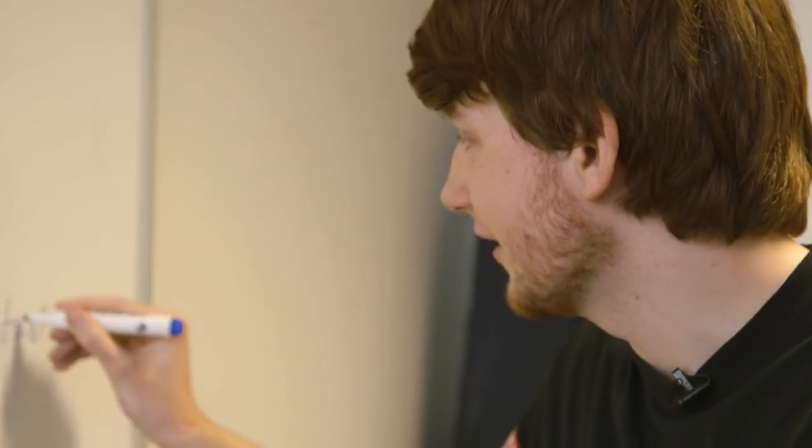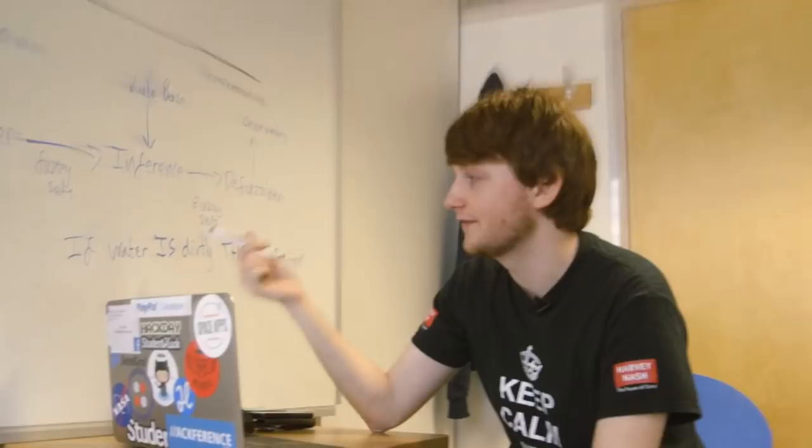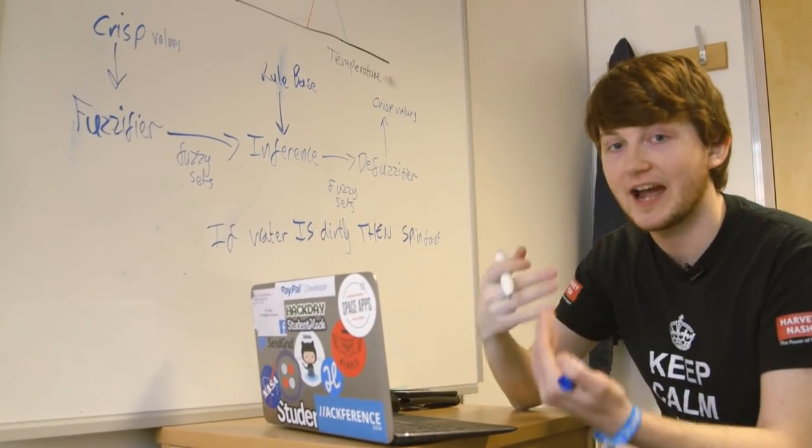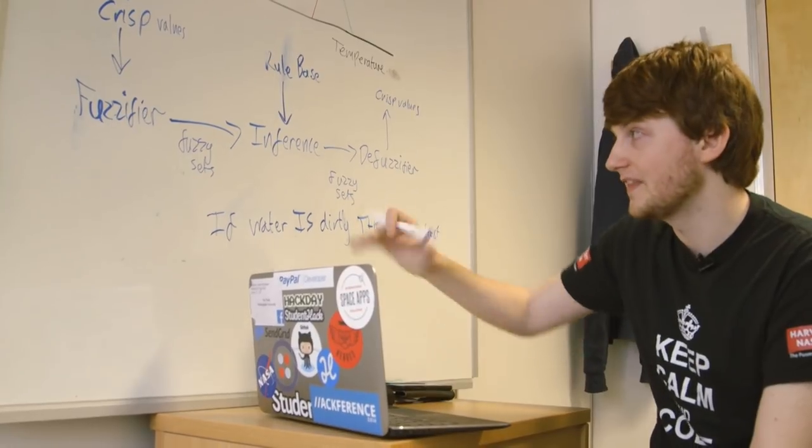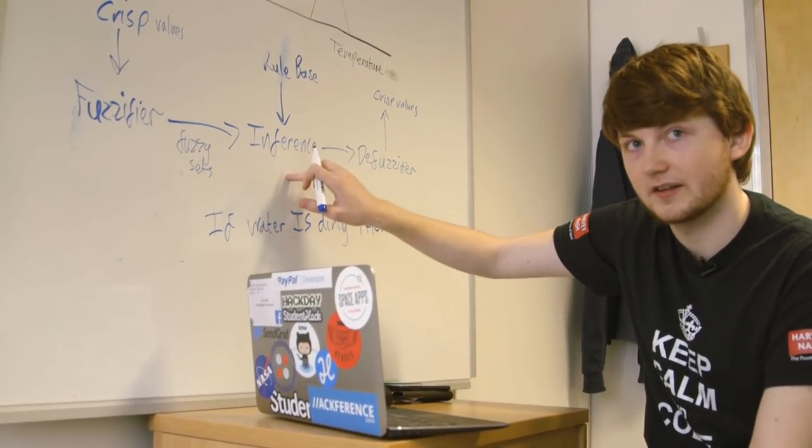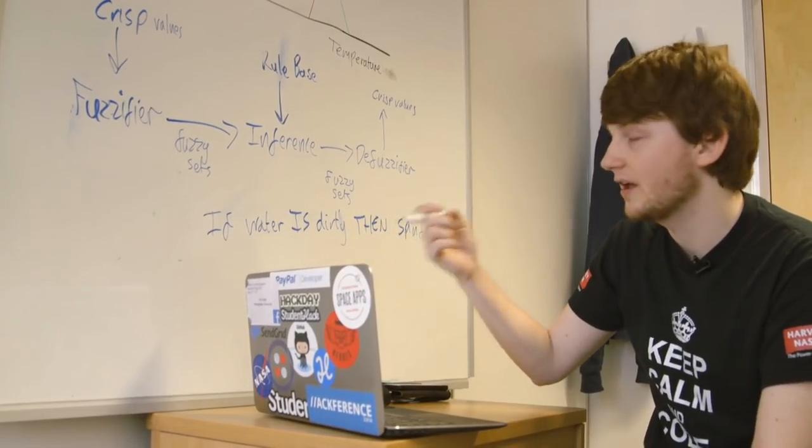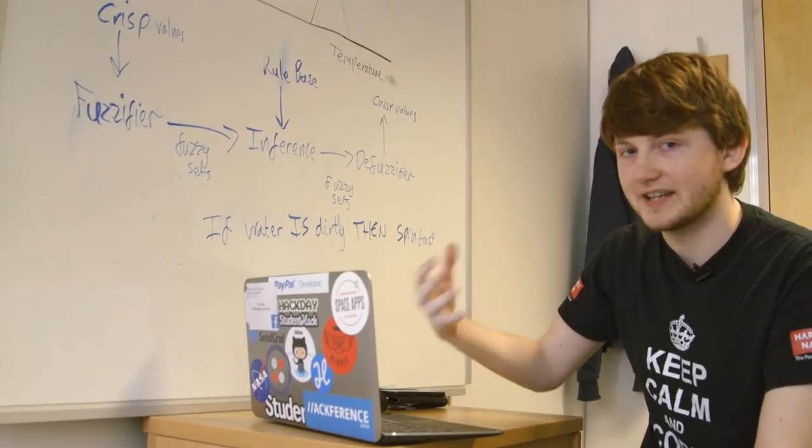That gets on to the next point. We actually have a rule base. There's multiple rules for different membership functions, for different actions, different outputs. We run all of these rules through them, and then we combine them in this inference engine. This is what the inference engine does. It takes these rules, it applies the fuzzy sets to them, and it combines them to come up with some output, some decided action.